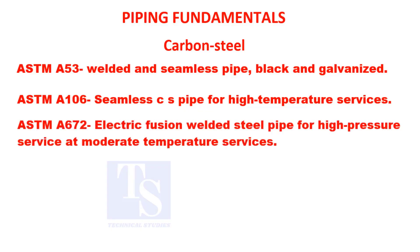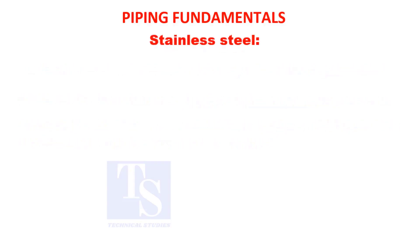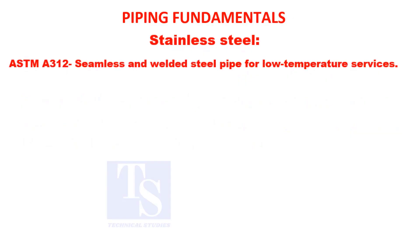ASTM A-672: electric fusion welded steel pipe for high pressure and moderate temperature services. ASTM A-358: electric fusion welded austenitic steel pipe for corrosive and high temperature services.